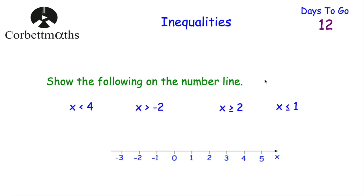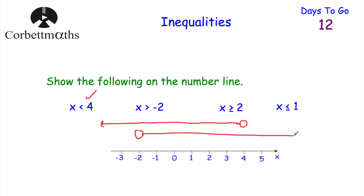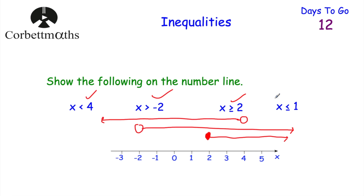Here are some for you to try — press pause and show these inequalities on a number line. For x is less than 4: hollow circle at 4, arrow to the left. For x is greater than negative 2: hollow circle at negative 2, arrow to the right. For x is greater than or equal to 2: shaded circle at 2, arrow to the right. For x is less than or equal to 1: shaded circle at 1, arrow to the left.